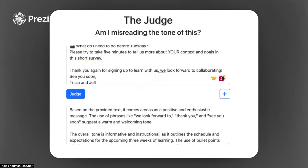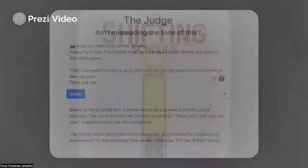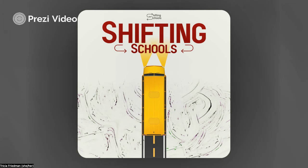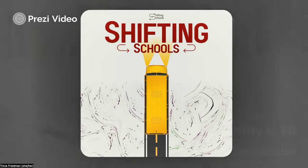Another option I'll show you is just the Judge. I've copy-pasted in the email that went out to our February AI cohort to get it to judge the tone of this. I think that's an interesting way to start talking about tone, about writing, about our messaging with students.